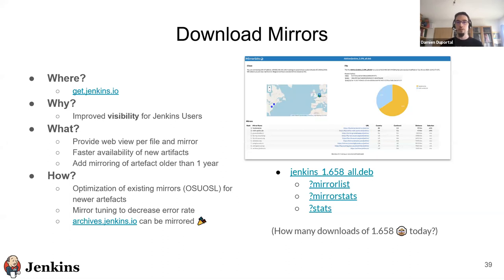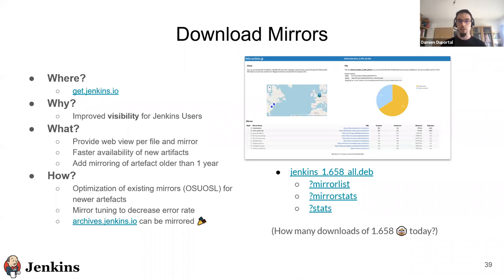One of the most important achievements has been the download mirror. It's for the persona of the Jenkins user. What has been done is providing more visibility for people and better performance. We reduced the time between when an artifact — a plugin or a core release — is published and deployed and the time it's available for everyone across the world. As a Jenkins user, if you have any issue, you can add to the query string one of three elements on that example, which will show you a nice web view to see where you are located, which mirror you're currently using, and a bunch of stats that could help you diagnose.